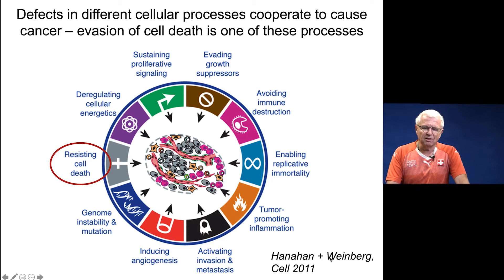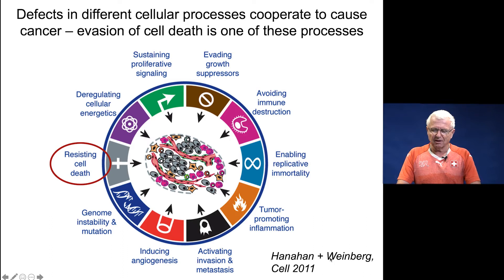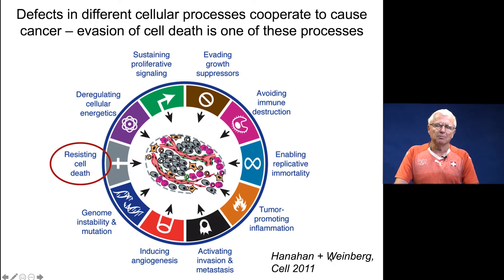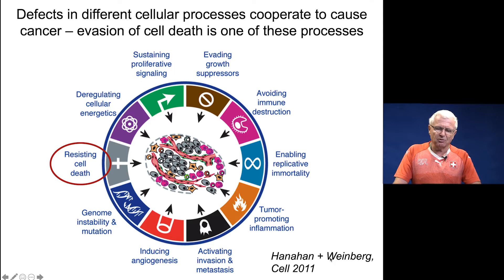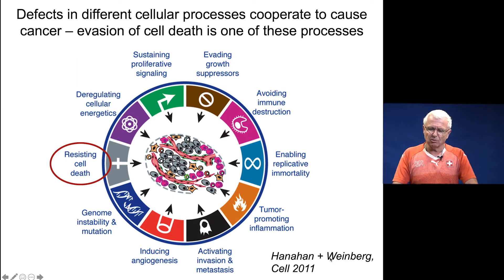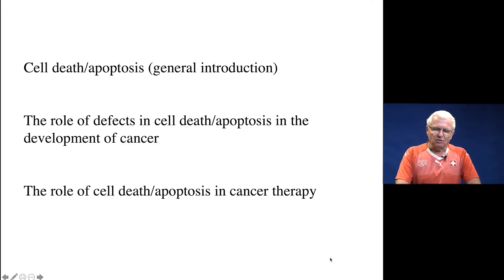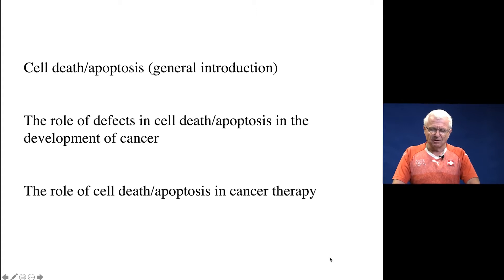All of you will have seen various versions of the beautiful scheme from Doug Hanahan and Bob Weinberg, indicating which processes must go awry for normal cells to become malignant cancer cells and cause disease in humans or animals. Resisting cell death has been part of this scheme from the beginning. I'll present the data that led them to include evasion of cell death as an attribute cancers must acquire to become malignant. I'll start with a general introduction to apoptosis, then discuss roles of defects in cell death in cancer development, and finally describe the role of cell death in cancer therapy.